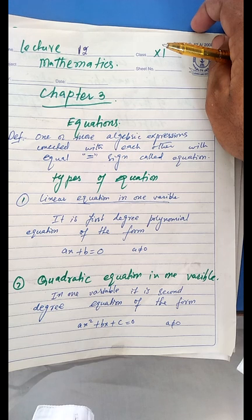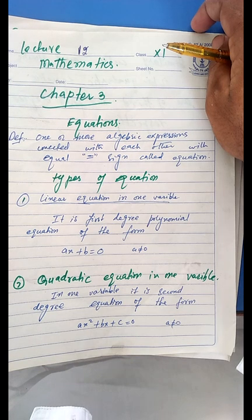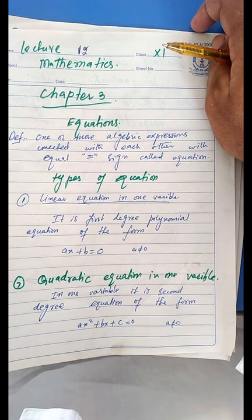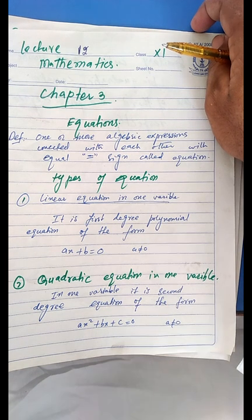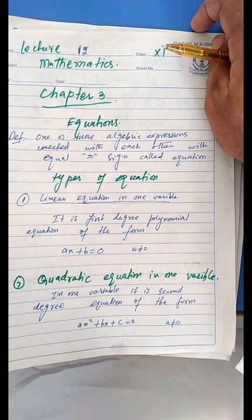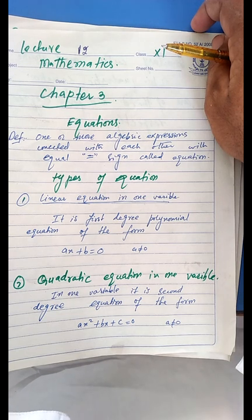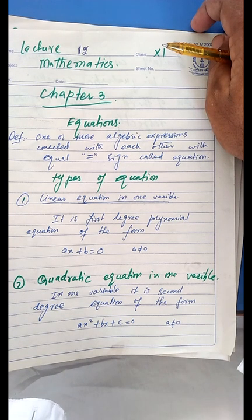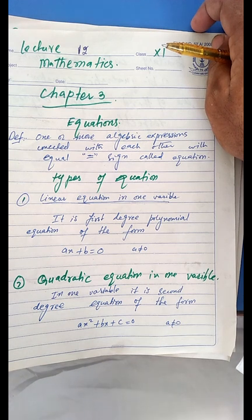Now there are types of equations. First, we need to understand that a variable in an equation can be 1, 2, or 3. If there is one variable, we call it an equation of one variable. If there are two variables, we call it an equation of two variables, and similarly for three variables.